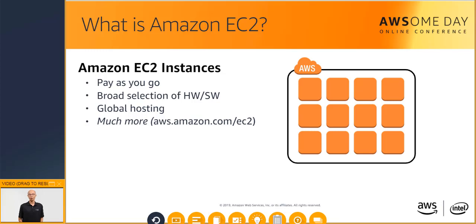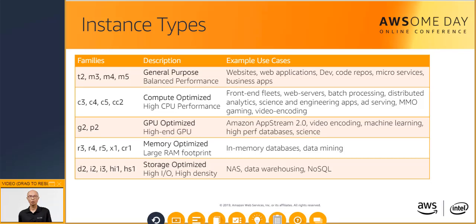Instances are pay-as-you-go — you pay for running instances and for the time they are running. Amazon EC2 instances come with a broad selection of hardware and software, and a selection of where to host your instances. If you have been using any kind of hypervisor on-premises, an EC2 instance is conceptually similar to a virtual machine. There are many different families of instance types grouped into broad categories for different use cases.